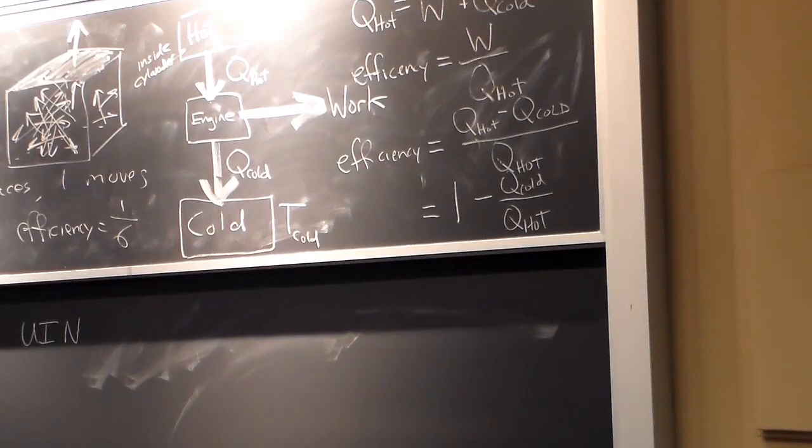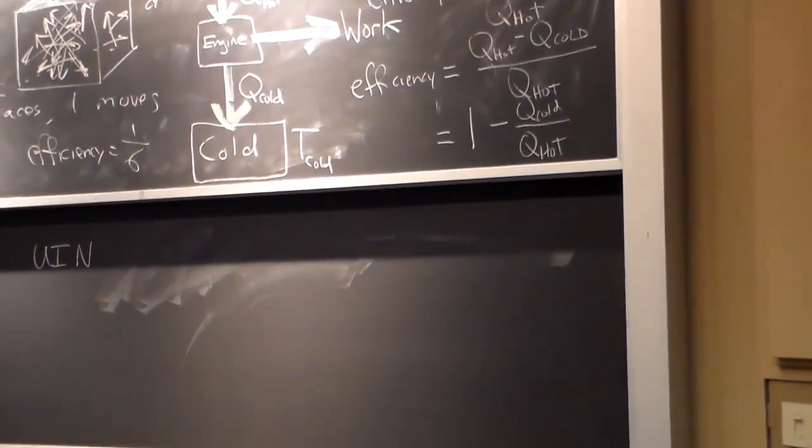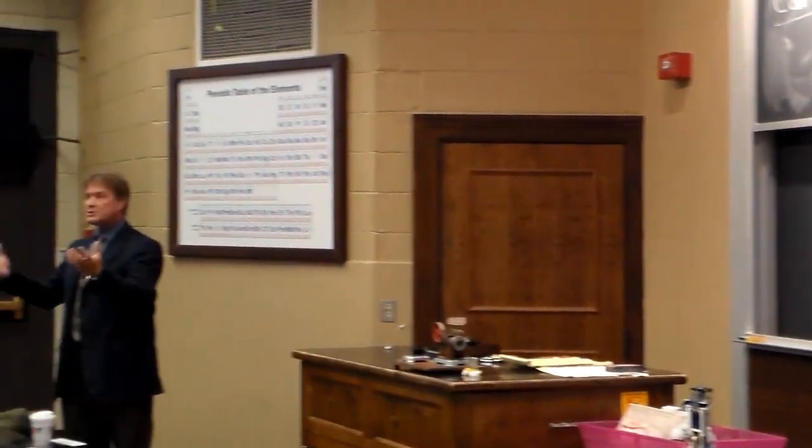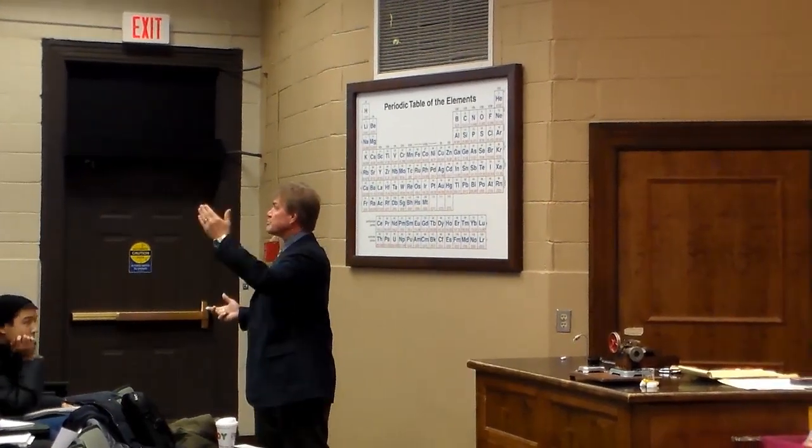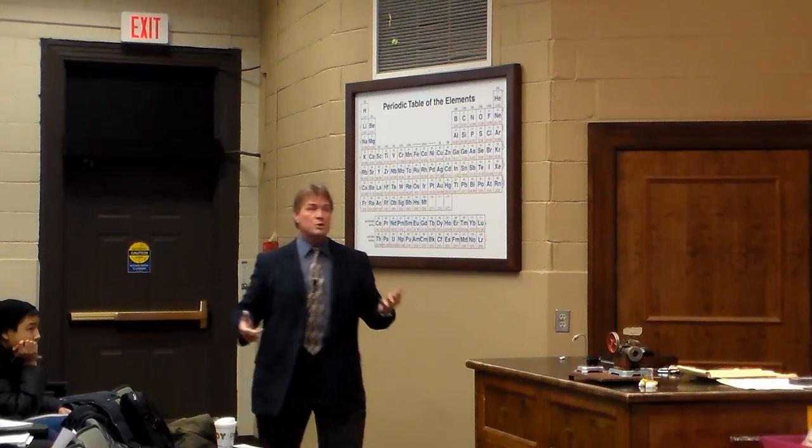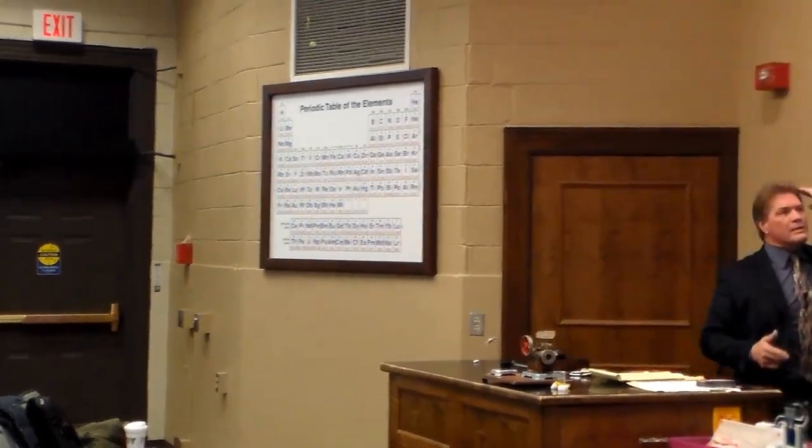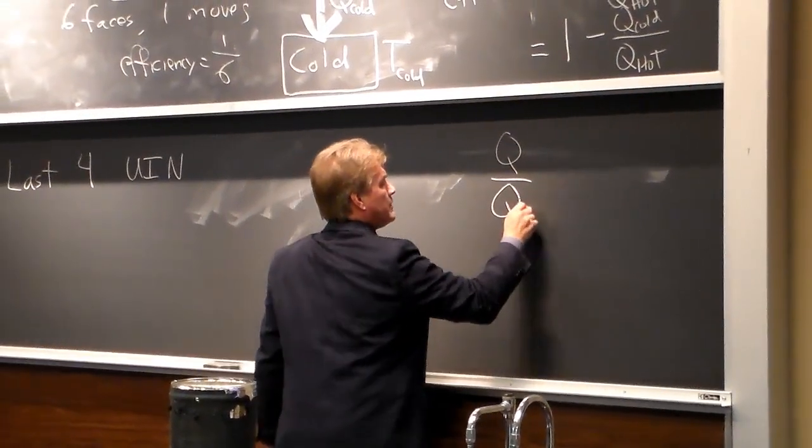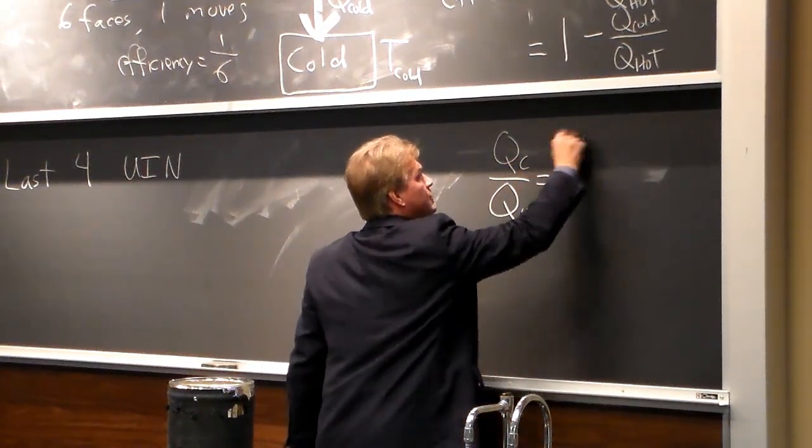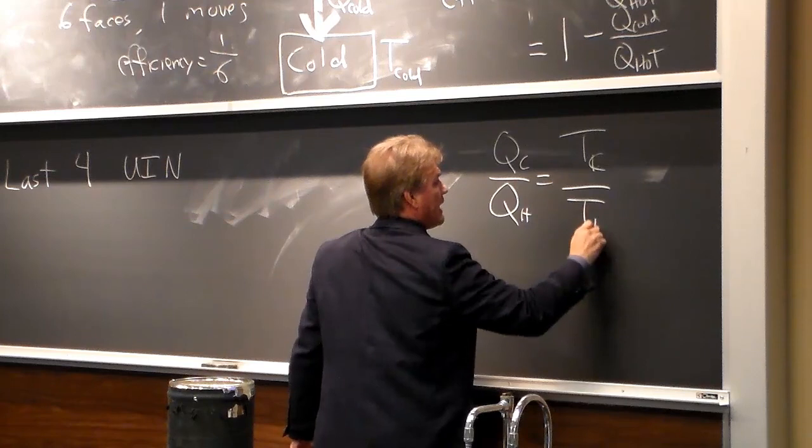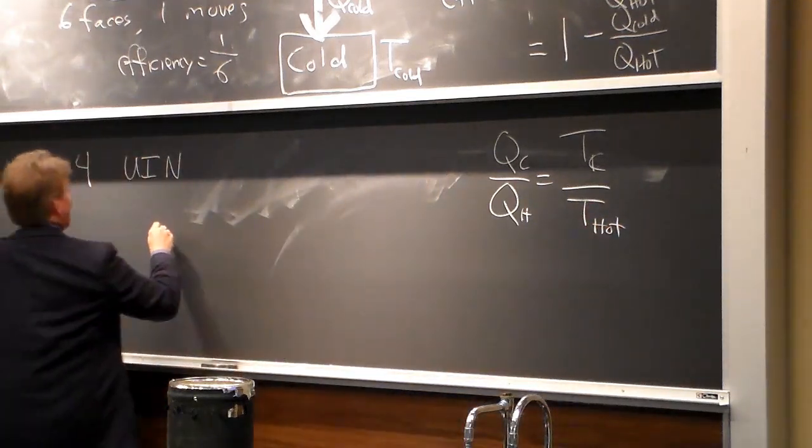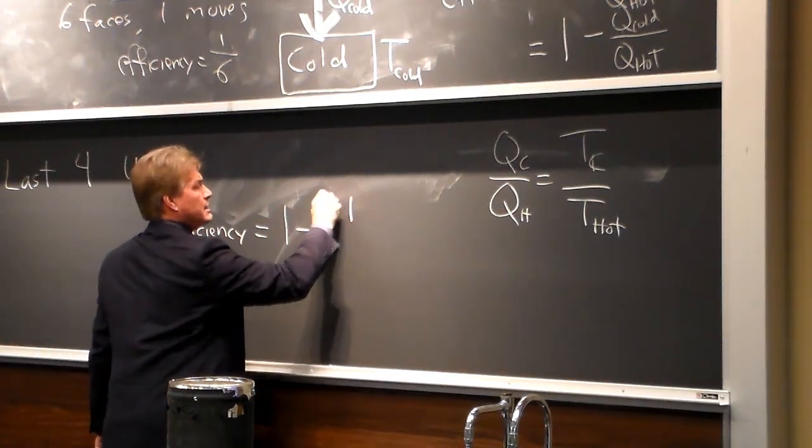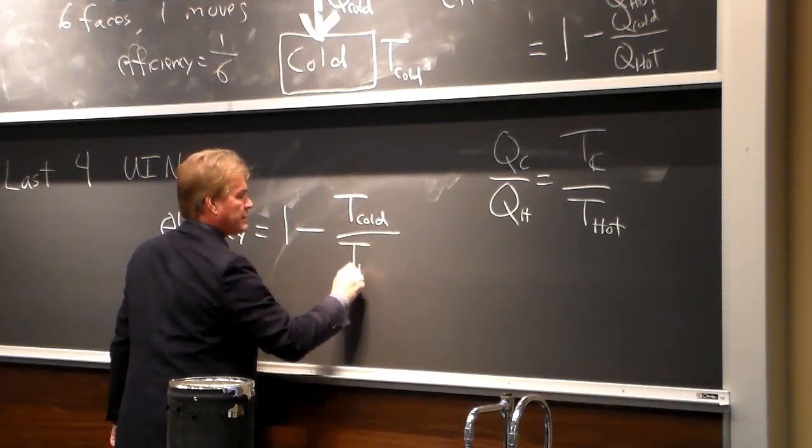If I have something really, really hot in temperature, I can transfer more heat. If I have really something cold in temperature, I can transfer less heat. The temperature is proportional to the amount of energy I can transfer. Q is proportional to T. It's not equal to T, but it's proportional. And since it's going into the same engine, that proportionality is the same. So Q-hot over Q-cold, Q-cold over Q-hot is equal to T-cold over T-hot. And therefore, I can write that my efficiency is equal to one minus the cold temperature over the hot temperature.